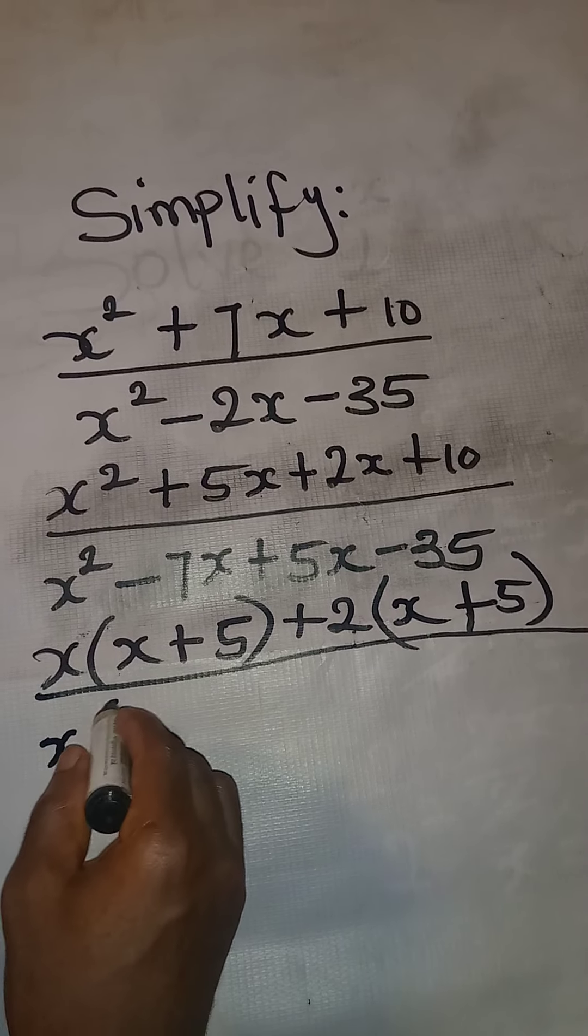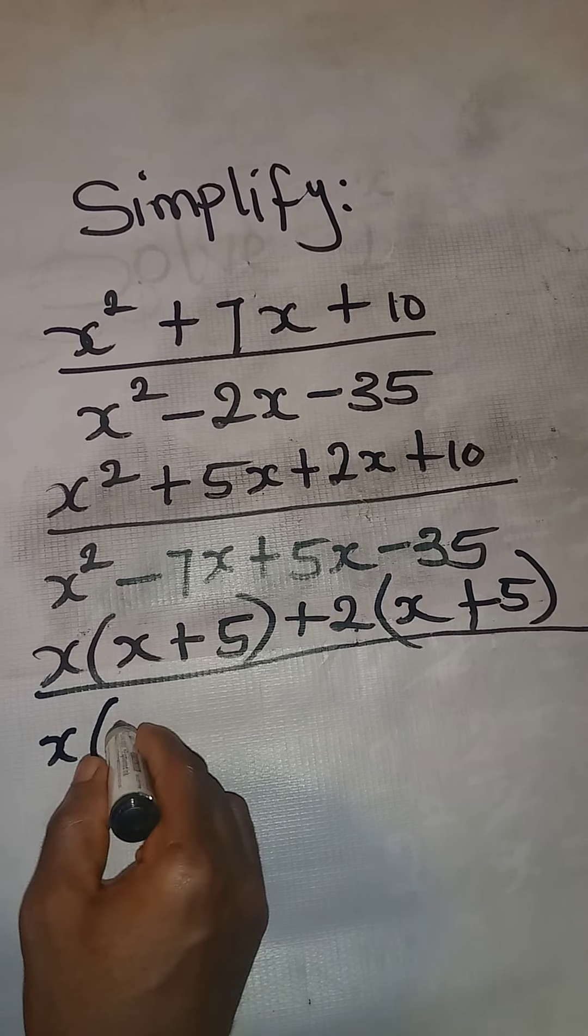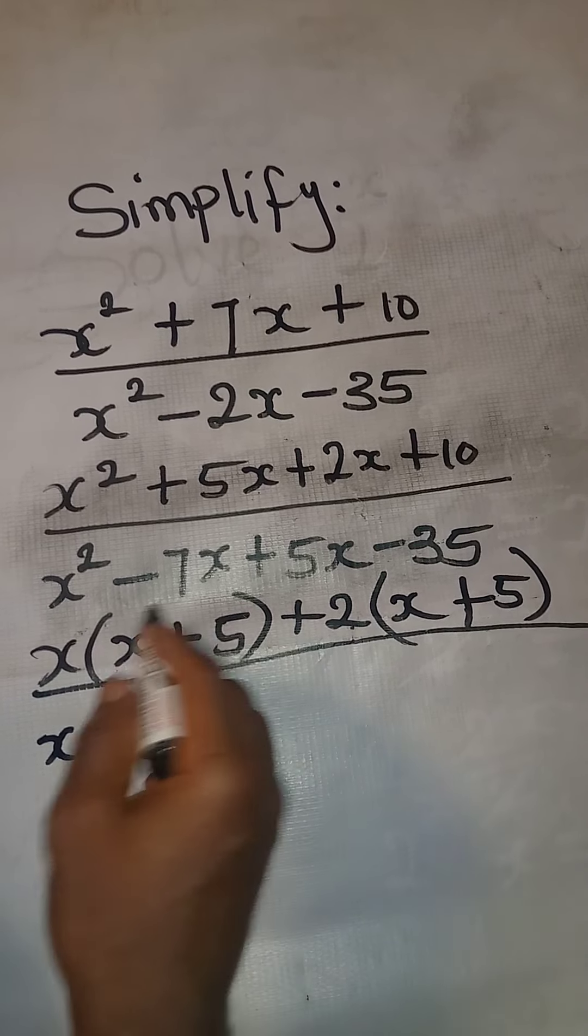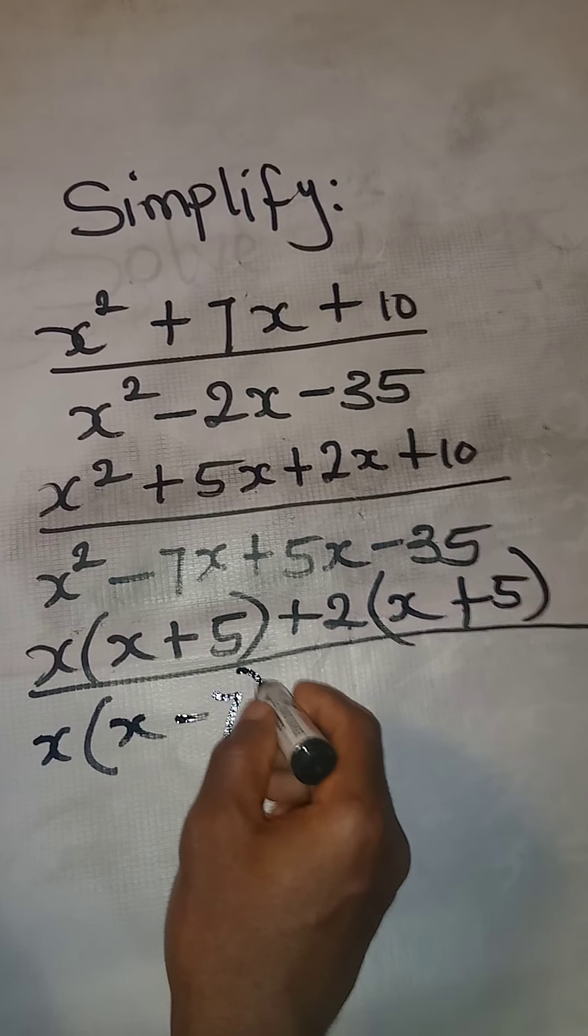Open the bracket. If x comes out of this one, 1x will remain there. Then minus, if x goes out of this, 7 comes, then we'll have 7.